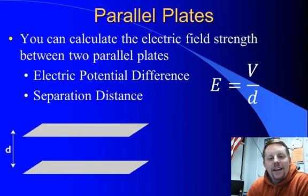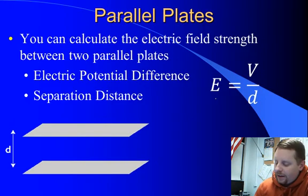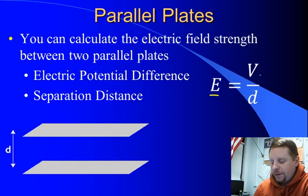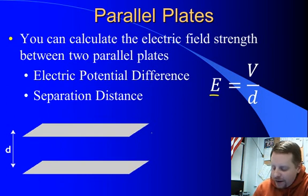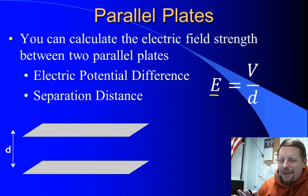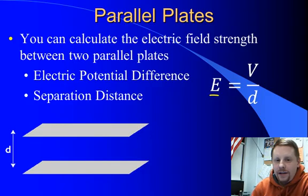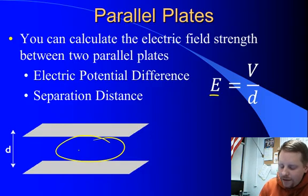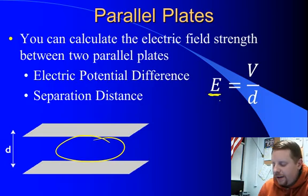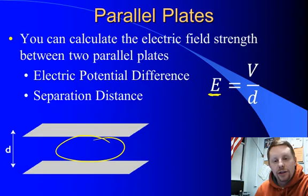You can calculate the electric field strength between two parallel plates using the formula electric field strength equals the potential difference between the plates divided by their separation. Now, in reality, if you're right near the edges of the plates, things bend a little bit, so it's not quite perfect right at the edges. But anywhere between the two plates, the electric field strength is constant, and it's given by the potential difference divided by their separation.